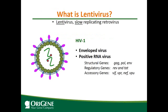So what is lentivirus? Lenti means slow, so lentivirus is a slow-replicating retrovirus. Most lentiviral vectors were derived from HIV-1, which is an enveloped virus. The genome has two copies of positive RNA, and here are the viral genes.